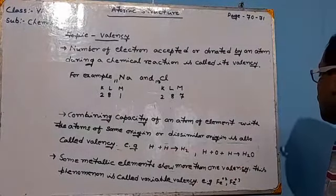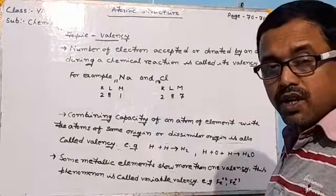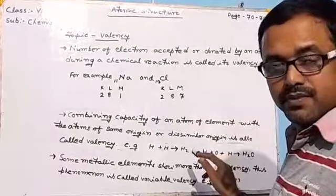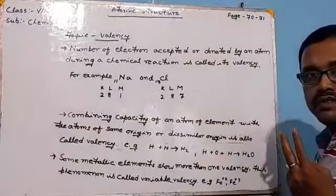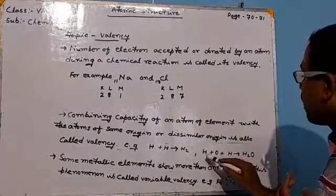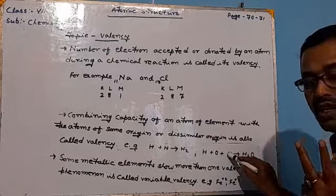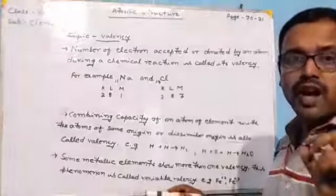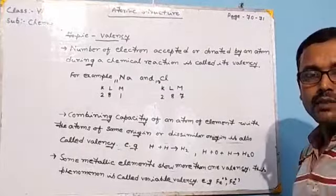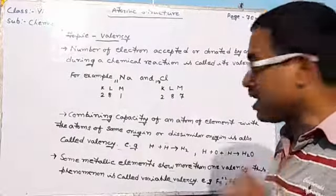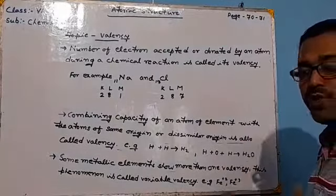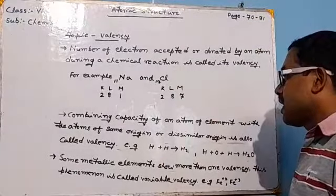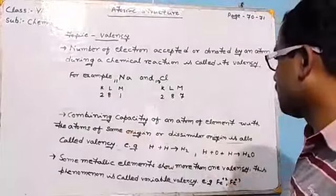Another example is water, H2O. When the water molecule is formed, two hydrogen atoms chemically join with one oxygen atom. The combining capacity of oxygen is two, because one oxygen atom joins with two hydrogen atoms — so the valency of oxygen is two. Each hydrogen atom joins with one oxygen atom, so the combining capacity of each hydrogen atom is one, meaning the valency of hydrogen is one.